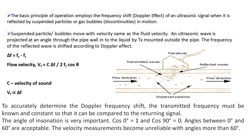The velocity of the moving fluid is directly proportional to delta f. To accurately determine the Doppler frequency shift, the transmitted frequency must be known and constant so it can be compared to the returning signal. The angle at which the transducer injects waves into the pipe is very important — cos 0° equals 1 and cos 90° equals 0. Angles between 0° and 60° are most commonly used.